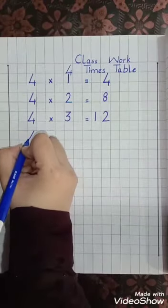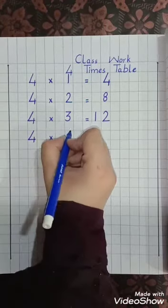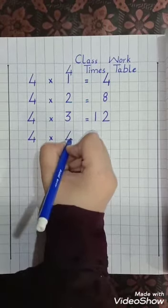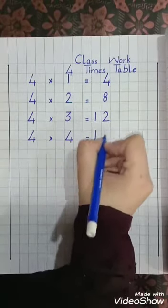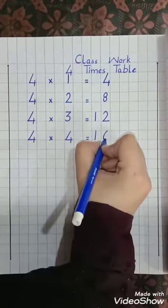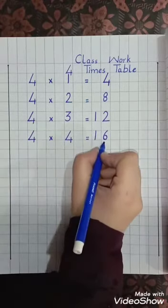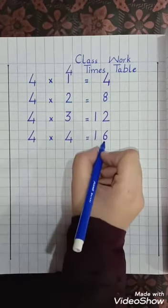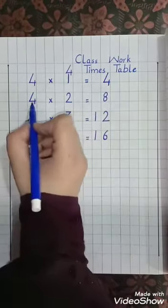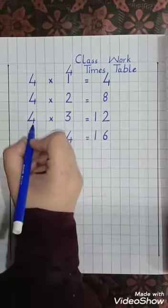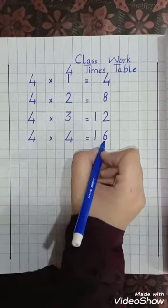Four, multiply, four, equal lines — 16. Four fours are 16. Four fours are 16. Four ones are 4, four twos are 8, four threes are 12, four fours are 16.